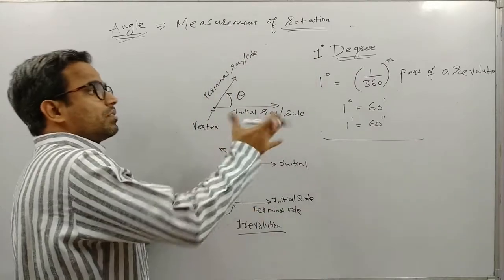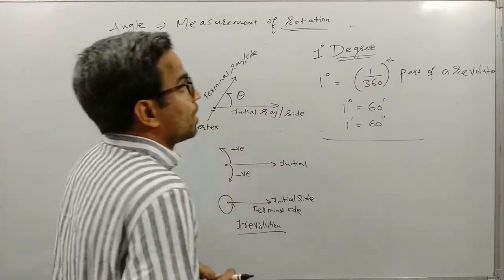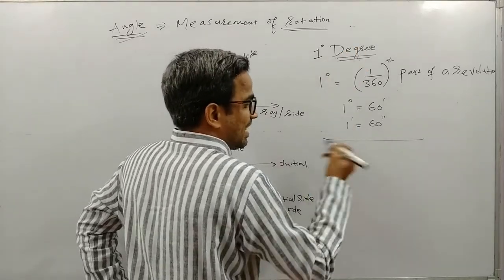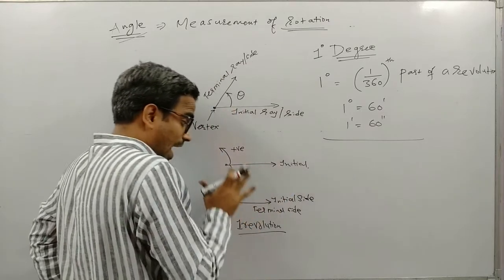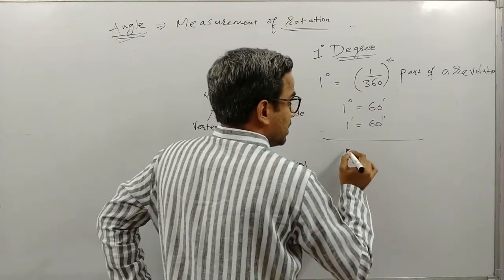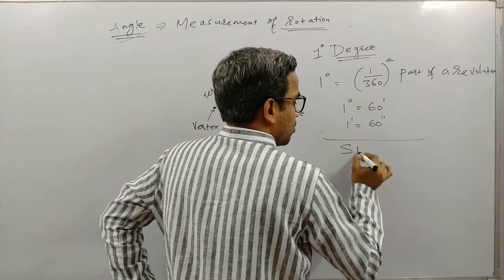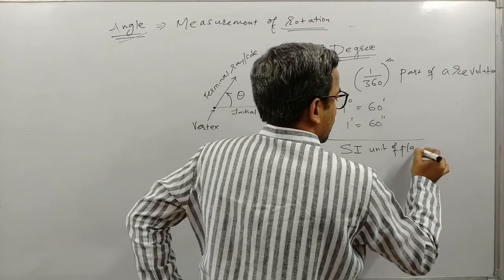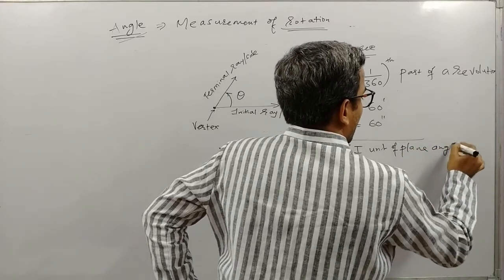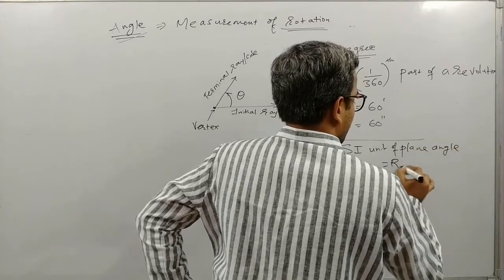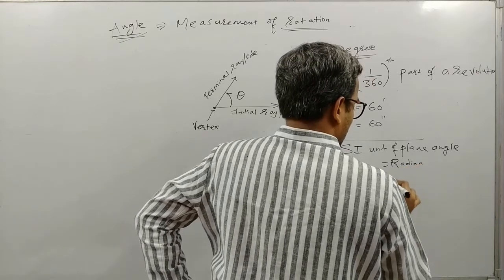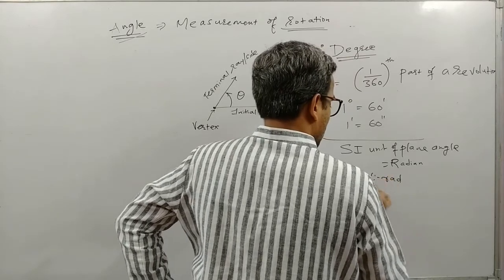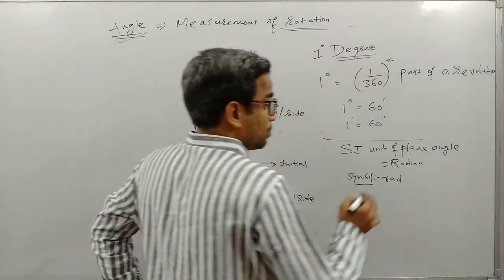Now, what you must have studied in school uses degrees. But from 11th standard onwards, we measure angles not in degrees but in radians, because the SI unit of plane angle is radian, with symbol 'rad'.